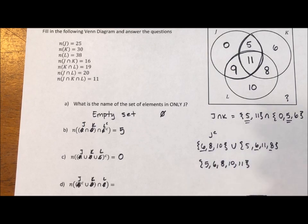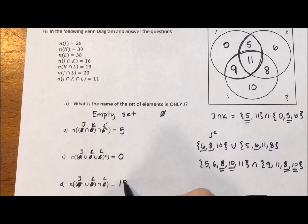And we want to do the intersection of that with L. L has the regions 9, 11, 8, and 10. The intersection there is what they have in the same. So they both have an 8, they both have a 10. So the number of elements is 8 plus 10 or 18.